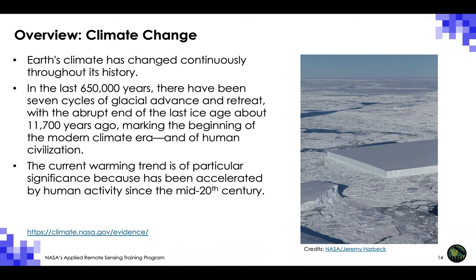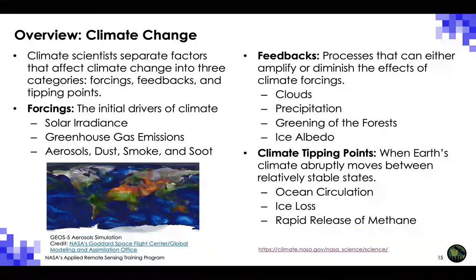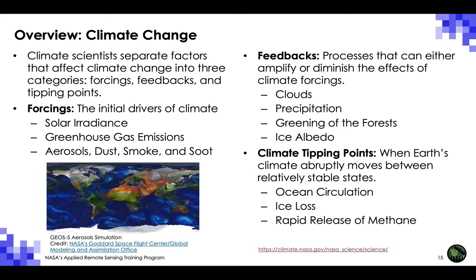Climate scientists separate factors that affect climate change into three categories: forcings, feedbacks, and tipping points. Climate forcing refers to an energy imbalance caused by natural or man-made processes, and is the difference between the rate of energy received by absorption of solar radiation and the rate of energy emitted by the top of Earth's atmosphere, expressed in watts per square meter. Contributors to climate forcing include solar irradiance, greenhouse gas emissions, and aerosols, dust, and smoke.